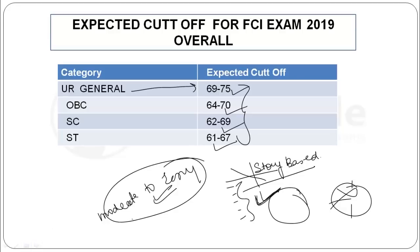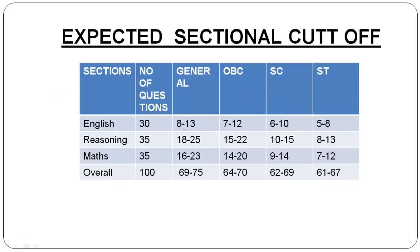This is our overall cutoff. Now let's see the sectional cutoffs. English language: for general category 8 to 13, OBC 7 to 12, SC 6 to 10, and ST 5 to 8. For reasoning: 18 to 25, OBC 15 to 22, SC 10 to 15, ST 8 to 13. Maths: 16 to 23, OBC 14 to 20, SC 8 to 14, and ST 7 to 12. Overall: 69 to 75, OBC 64 to 70, SC 62 to 69, and ST 61 to 67.